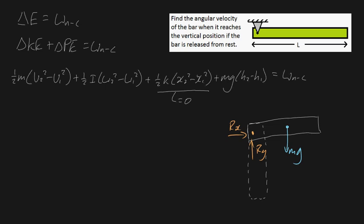Notice, I should actually draw mg downwards at this point just here. So in order to figure out the work done by non-conservative forces, we need to identify what the non-conservative forces are. Bingo, they're Rx and Ry. But the work done by these two forces is zero,